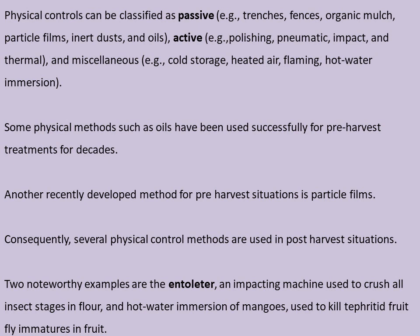Some physical methods such as oils have been used successfully for pre-harvest treatments for decades. Another recently developed method for pre-harvest situations is particle film. Several physical control methods are also used in post-harvest situations. Two noteworthy examples are the entoleter — an impacting machine used to crush all insect stages in flow — and hot water immersion of mangoes used to kill diapaused fruit fly immatures.